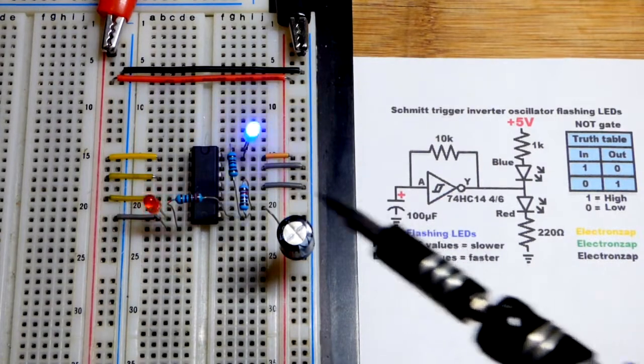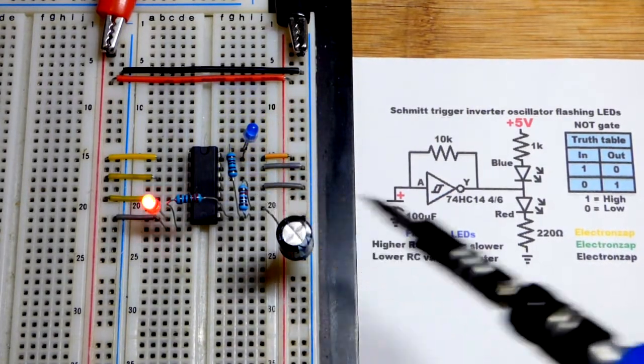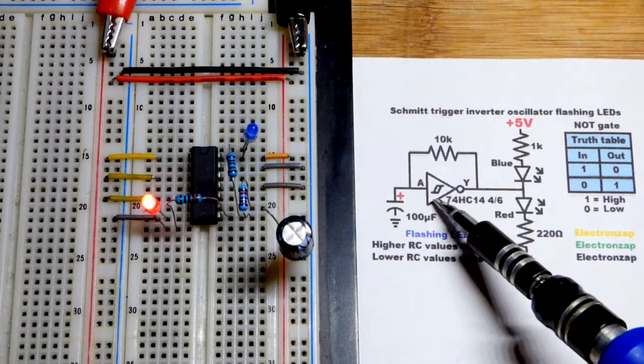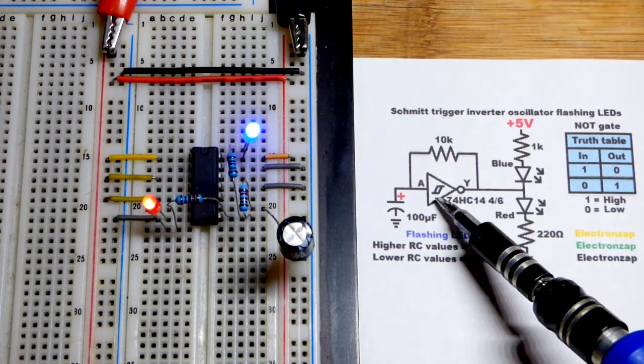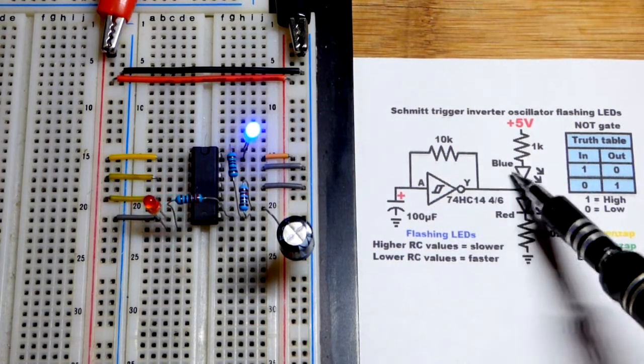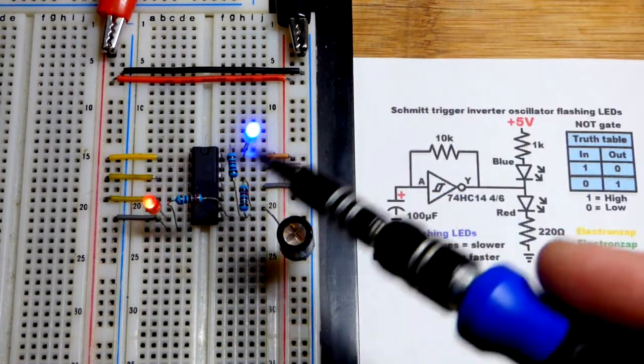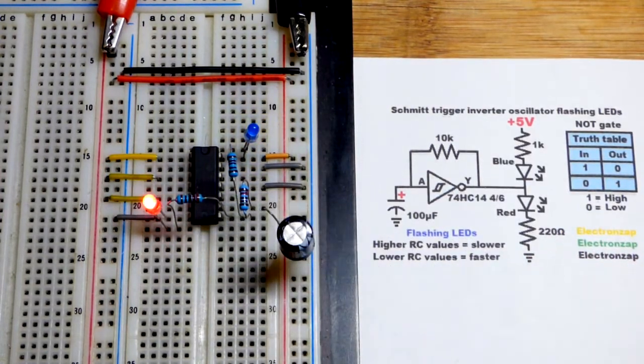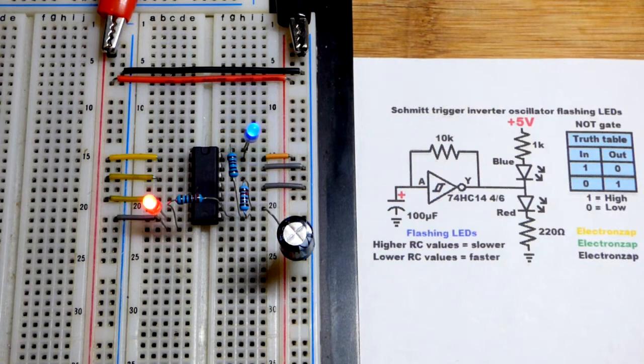So now in this video we're going to look at a circuit where a Schmitt trigger inverter self-oscillates. At the output we have a couple LEDs with protective resistors so that the LEDs light up when the output goes high or low.